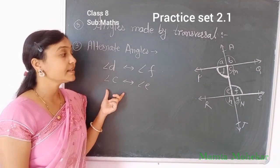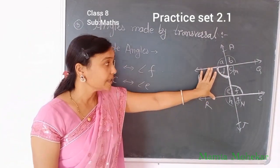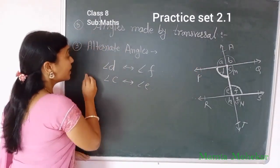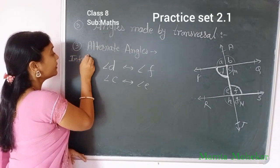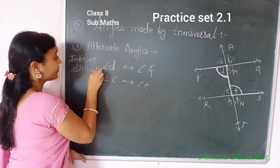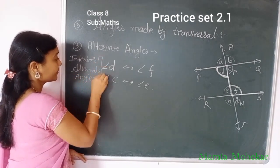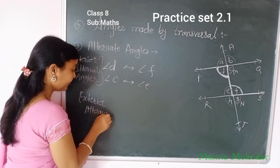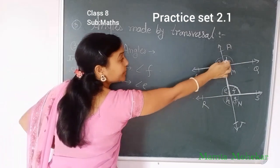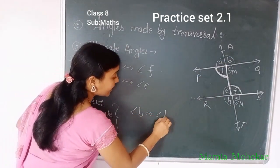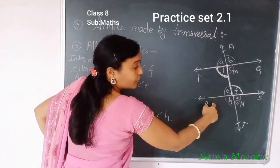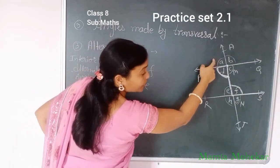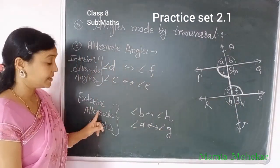In alternate angles, we have two types: interior alternate angles and exterior alternate angles. If the angles are inside the two lines, they are called interior alternate angles. If they are outside the two lines, they are called exterior alternate angles. For example, angle B alternate to angle H is an exterior alternate pair. Similarly, angle A alternate to angle G are exterior alternate angles — they are on opposite sides of the transversal and in opposite directions.